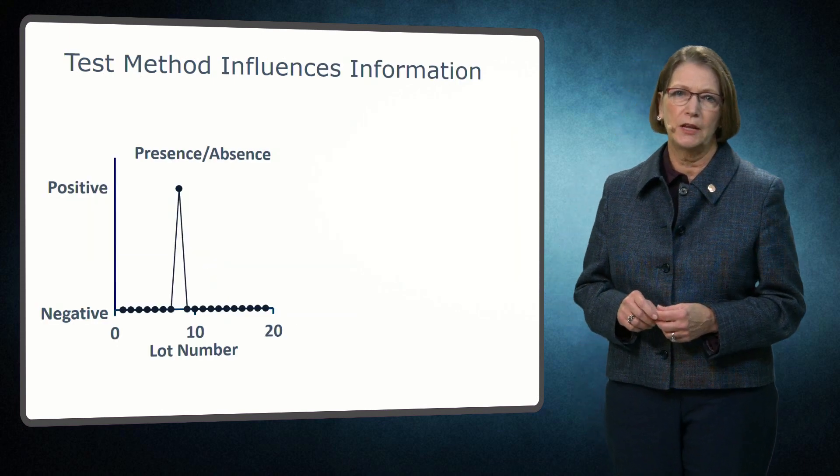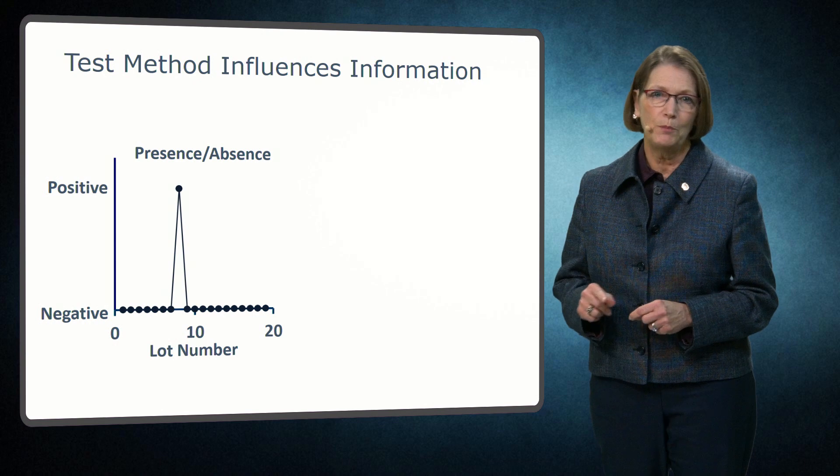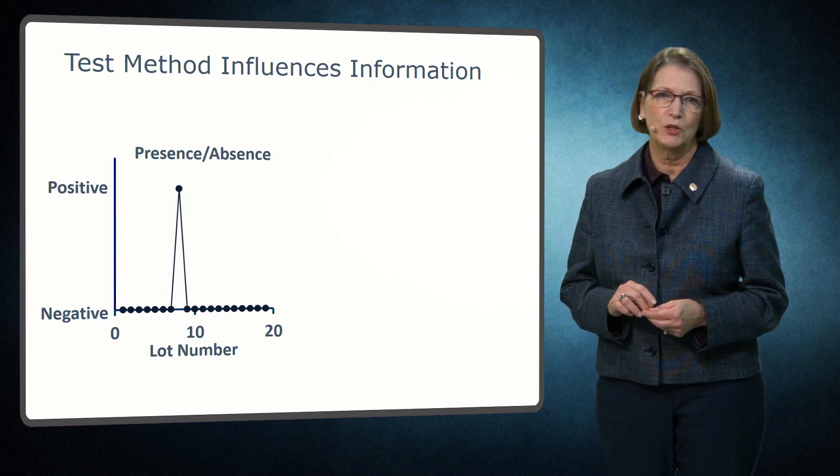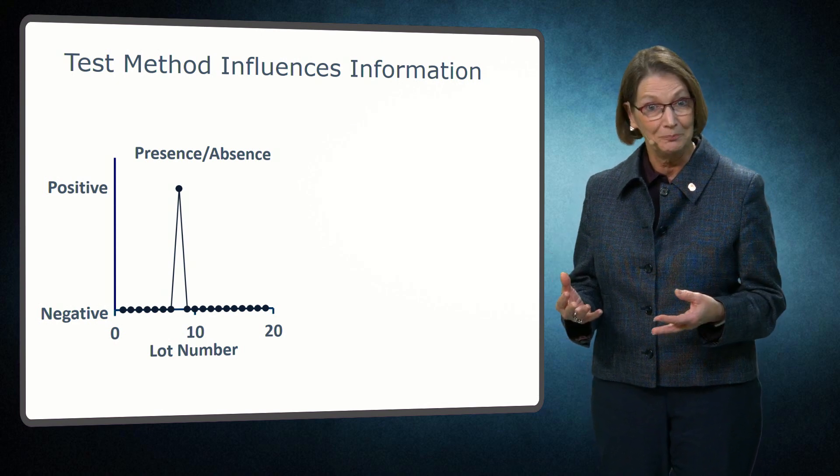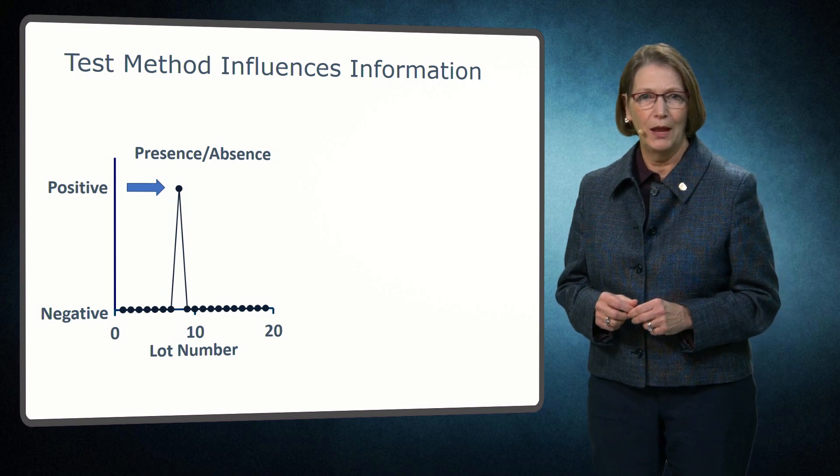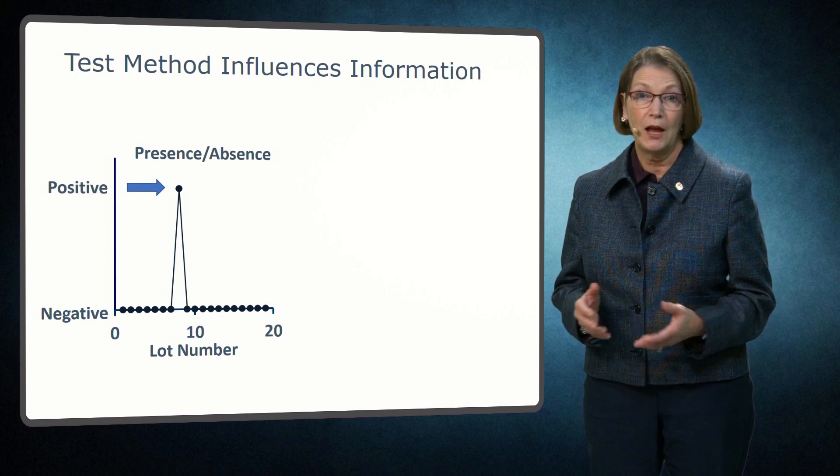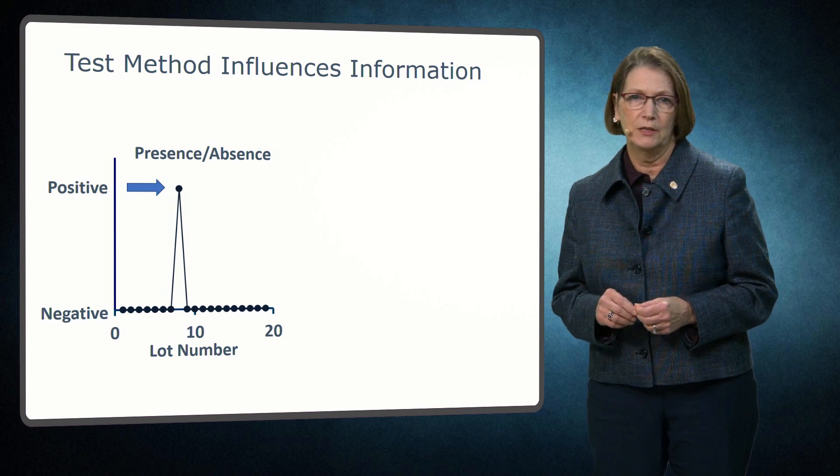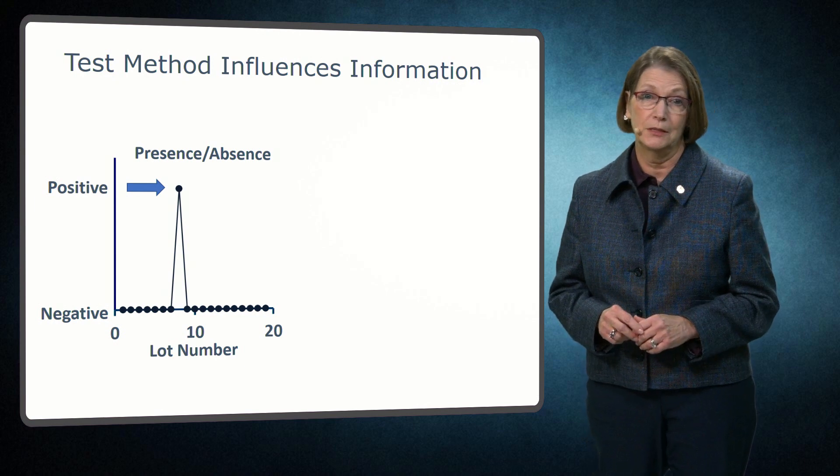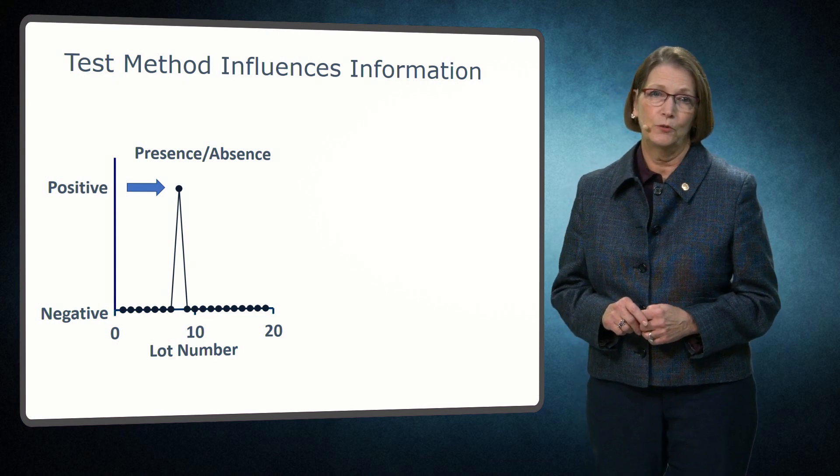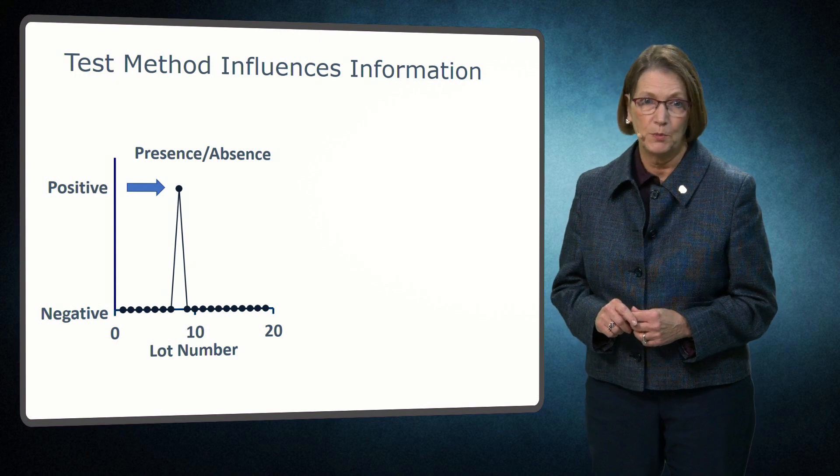This chart illustrates hypothetical data for packaging line B using presence-absence testing for a pathogen. Keep in mind, the production continues before the results are known because testing takes time. A pathogen is detected in lot number 8. As other ICMSF videos illustrate, it is difficult to know whether lots with a negative result may have low-level contamination that was not detected because of the sensitivity of microbiological testing. Thus, a positive result for a pathogen calls into question the safety of the lots produced before and after this positive lot.